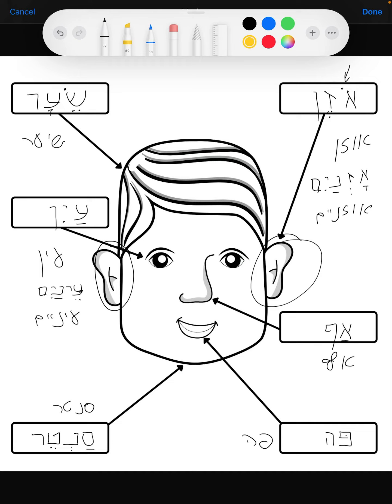Perfect, we just finished the worksheet. So let's review what we've learned today. Okay, we started with our af, we went to our pe, we continued with the santer, we learned how to say eye: ein, eyes: einaim. We then learned to say hair: sear, ear: ozen, and ears is ozenaim. Thank you for watching, toda raba.